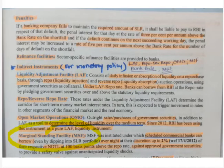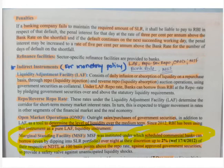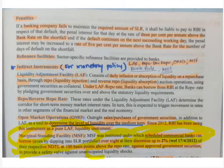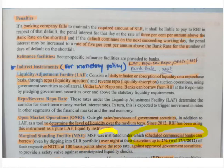MSF — Marginal Standing Facility — was introduced under which scheduled commercial banks can borrow even overnight up to 2% of their Net Demand and Time Liabilities (NDTL) at 100 basis points above the repo rate. Remember: only scheduled commercial banks can use MSF. Under MSF, the minimum request size is 1 crore and maximum is multiples of 1 crore. These figures are very likely to be asked in the exam.